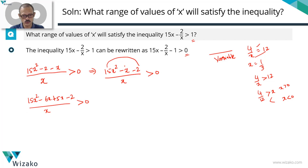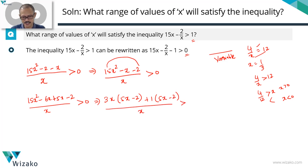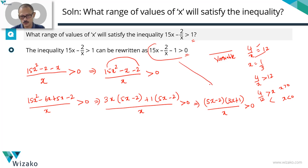Taking 3x common from the first and second parts leaves us with 5x minus 2. Taking 1 common from the remaining two parts gives us 5x minus 2 divided by x is greater than 0. So the expression factorizes as (5x minus 2)(3x plus 1) divided by x is greater than 0. We have now rewritten the entire expression in this factorized form.